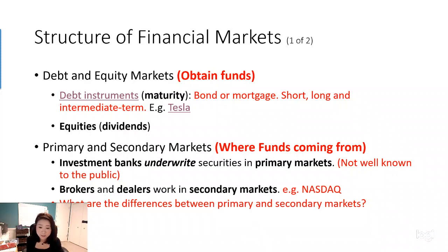When we talk about the debt market, we have to talk about debt instruments. A debt instrument includes things such as a government bond or a mortgage. If you own a house, you borrow money from the bank — that is called a mortgage. Both of them are examples considered as debt instruments. A debt instrument is a contractual agreement by the borrower to pay the holder of the instrument fixed dollar amounts.